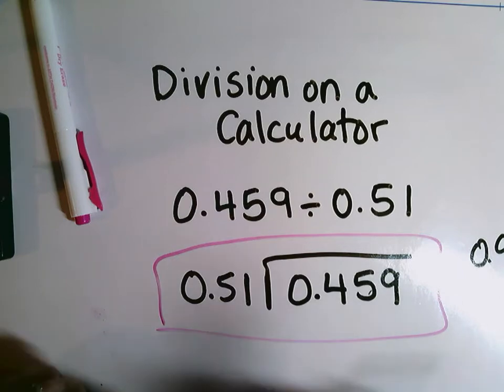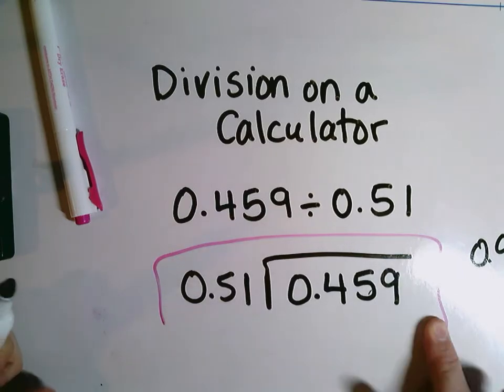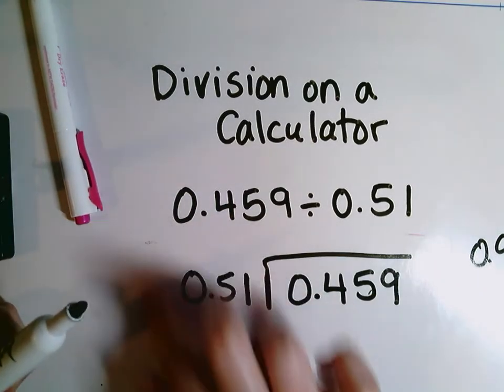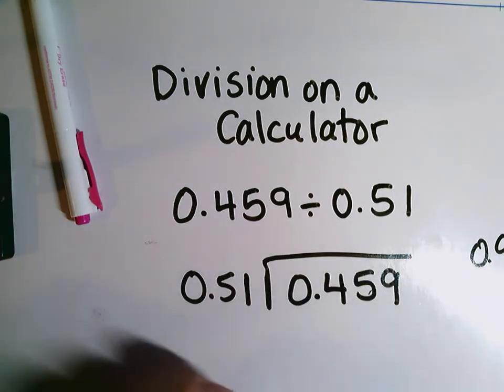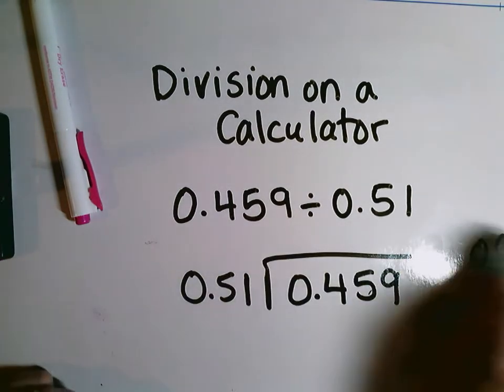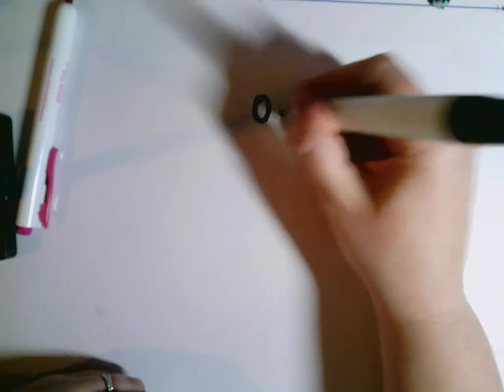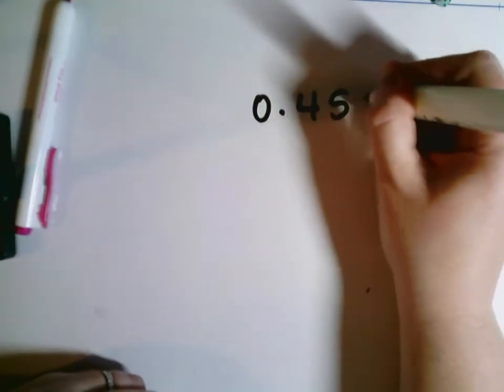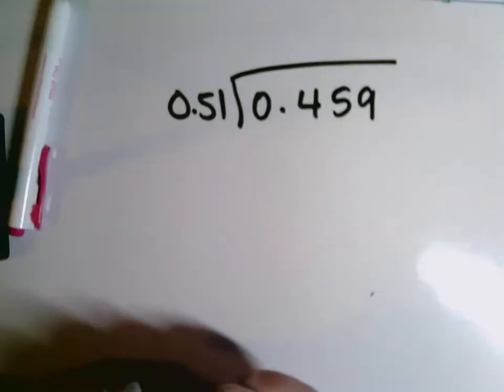So let's just double check and see how that would work out if I was doing this problem with pencil and paper. So let me write this problem out. So again, we had 459 thousandths and we're dividing it by 51 hundredths.